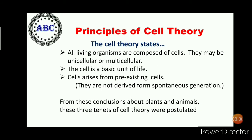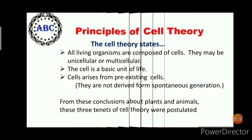The principles of cell theory state that all living organisms are composed of cells — they may be unicellular or multicellular. The cell is the basic unit of life. Cells arise from pre-existing cells; they are not derived from spontaneous generation. From these conclusions about plants and animals, these three tenets of cell theory were postulated.